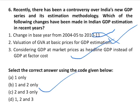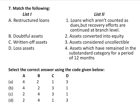Question number seven is a match-the-following on NPA categories. A restructured loan is an asset converted into equity. A doubtful asset is one that has remained in the sub-standard category for a period of 12 months. A return of asset refers to loans not counted as dues but where recovery efforts are continued at branch level. A loss asset is one considered uncollectible. The correct answer is option D.